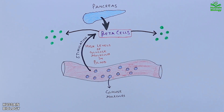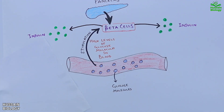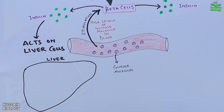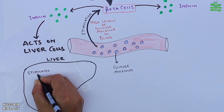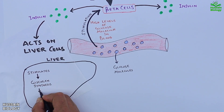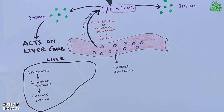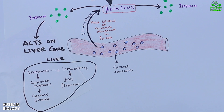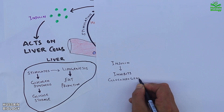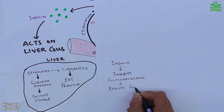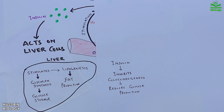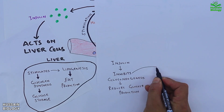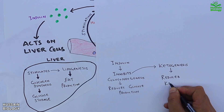Insulin acts on different organs and cells. Within the liver cells, it stimulates glycogen synthesis which increases glucose storage, and it also mediates lipogenesis which increases fat production. On the other hand, insulin inhibits gluconeogenesis which reduces glucose production, and it also inhibits ketogenesis which reduces ketone production.